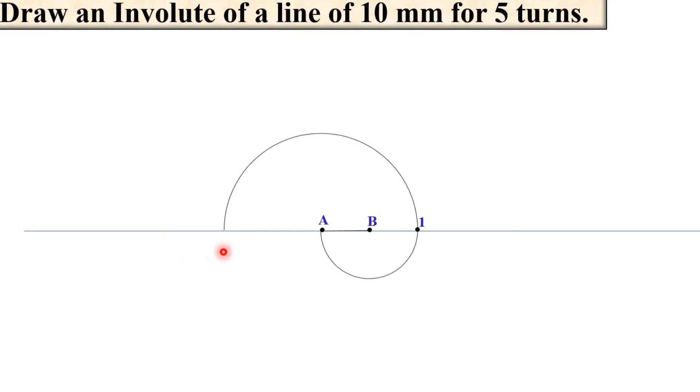Now mark the intersection point over here. Give the name as 2 because it is for the second turn.